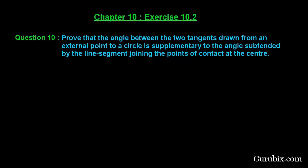Welcome friends, let us solve question number 10 of exercise 10.2, chapter 10. The question says: prove that the angle between the two tangents drawn from an external point to a circle is supplementary to the angle subtended by the line segment joining the points of contact at the center.